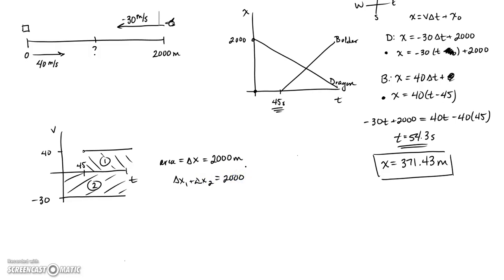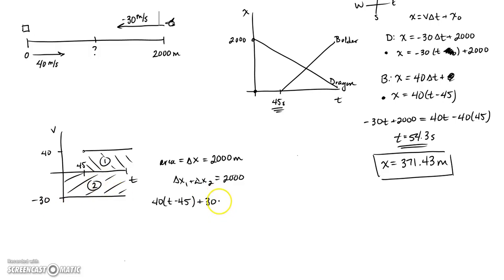Now I just calculate the areas — they're rectangles. Displacement one is 40 times (T minus 45). Displacement two is 30 — we don't care about the negative, we want pure area — times T. That equals 2,000. Now we only have one variable. You get 70T equals 3,800, so time equals 54.3 seconds again — the same as before.